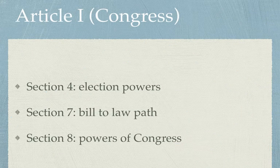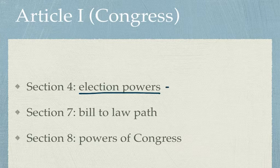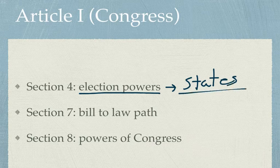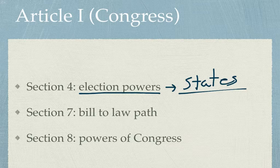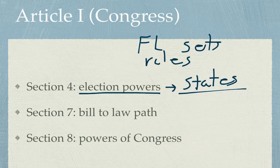Sections 4, 7, and 8 are also going to be really important. Article 1, Section 4 gives election times for House members and Senators a very interesting location — it heads to the states. States determine how national elections work. So how do you vote for your Florida House member or your Florida Senator? Florida sets the rules. If you're in Ohio, Ohio sets the rules. It's the state that ends up setting the rules for how elections are run, and this is huge.